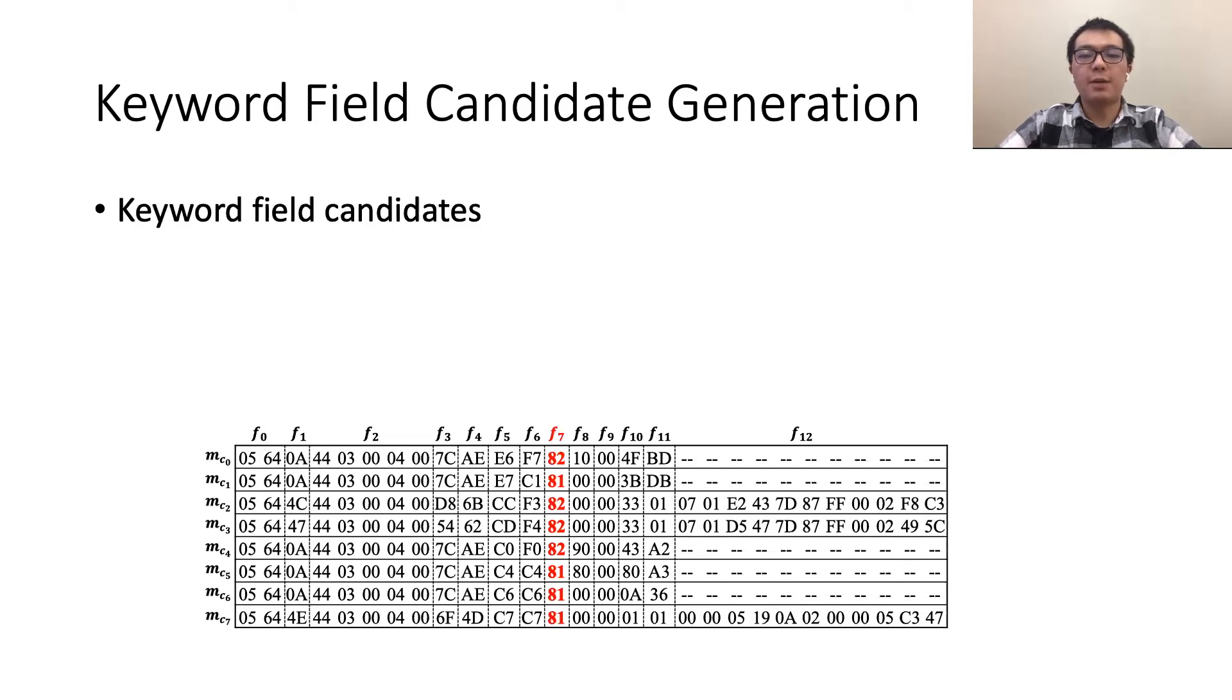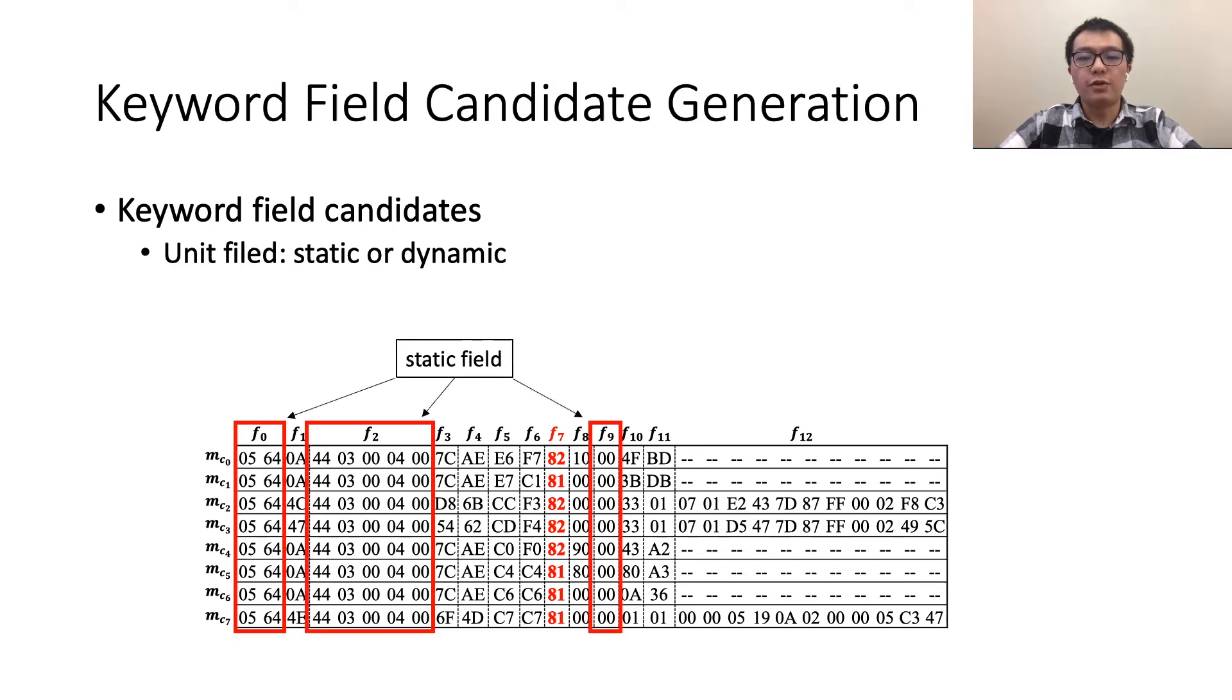This is the result after MSA. Gaps are inserted into the variable length fields in order to demonstrate alignment results. Based on it, we partition message data into fields in a very conservative way. First, we consider each aligned byte as a single unit field which could be marked as static if all message data have the same value, otherwise dynamic. Then consecutive static unit fields are merged to a larger unit field. For example, field 0, 2, and 9 are static unit fields and the others are dynamic. The compositions of multiple unit fields are called compound fields. A field in the real specification could be a unit field or compound field. So we generate a list of keyword candidates including all the unit fields and the compound fields that are shorter than a threshold, for example 10 bytes. Specifically field 7 is the true keyword defined by the specification.